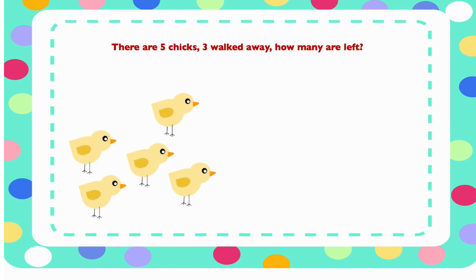In this picture, we have 5 chicks. 3 of them walked away. How many are left? Let's count them. 1, 2. 2 left. So 5 minus 3 will give us 2.